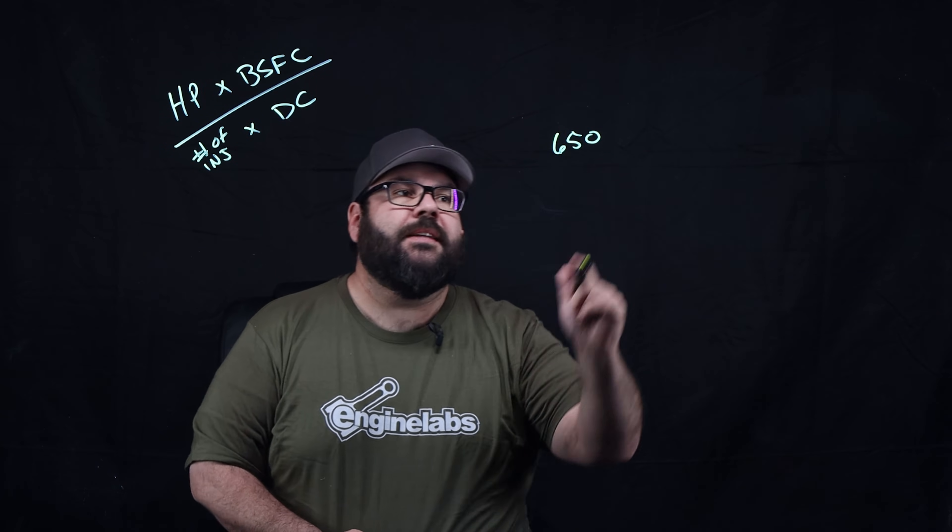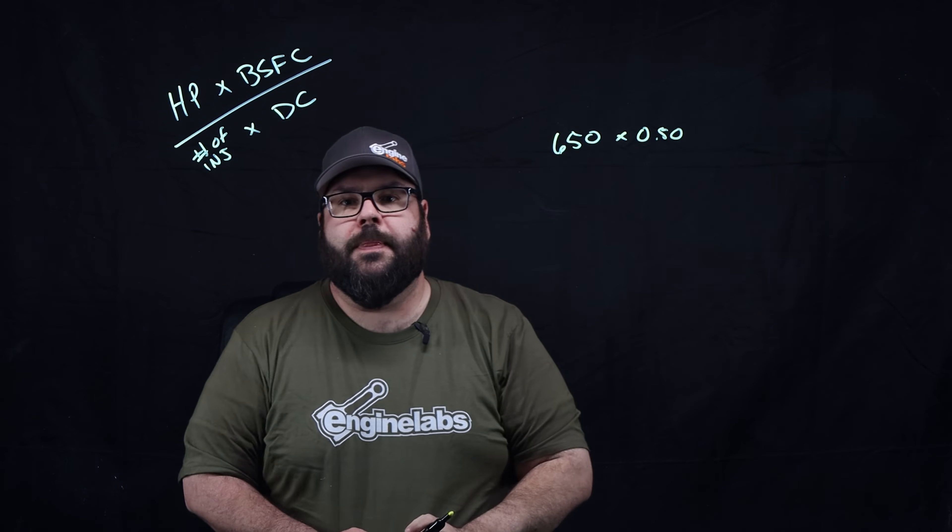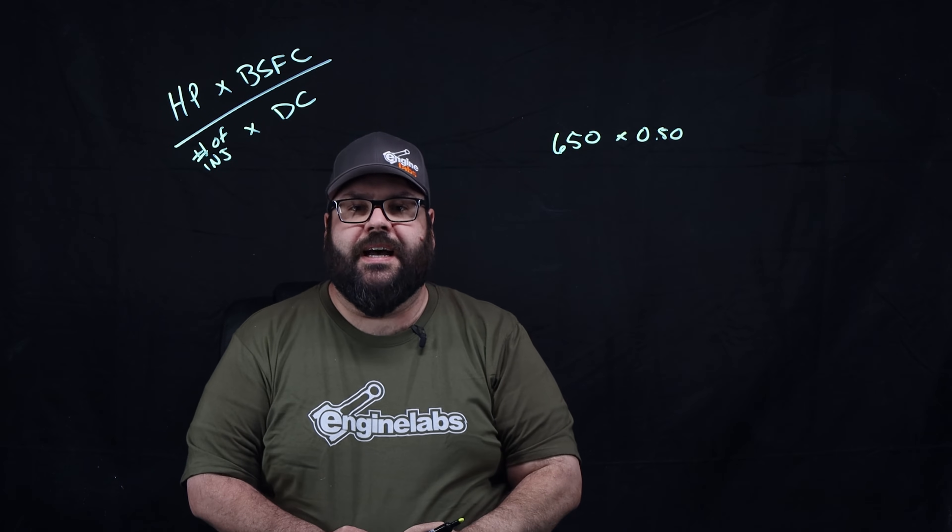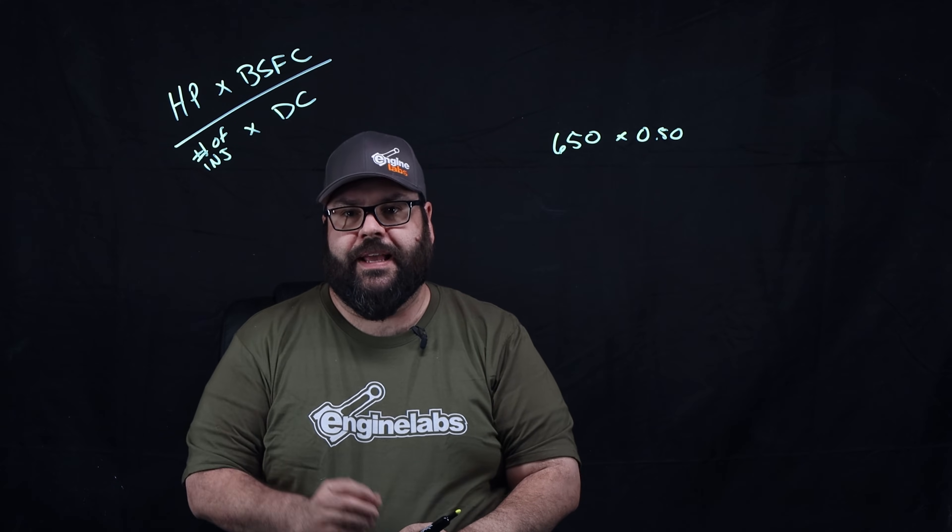For this calculation, let's go with 0.50. It's a little on the high side for a naturally aspirated build, but it will give us a little extra headroom in the calculation.